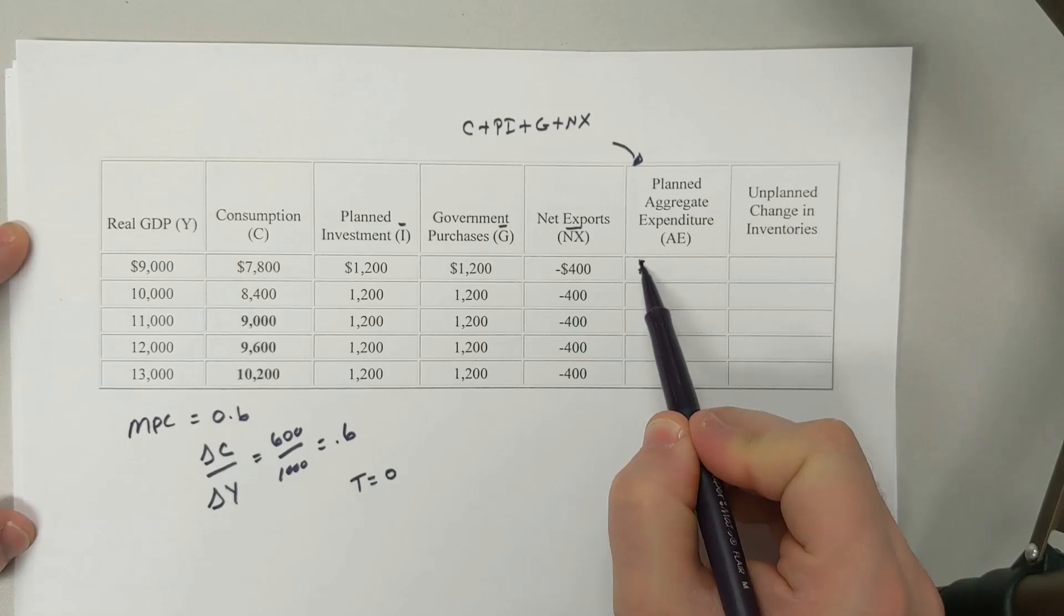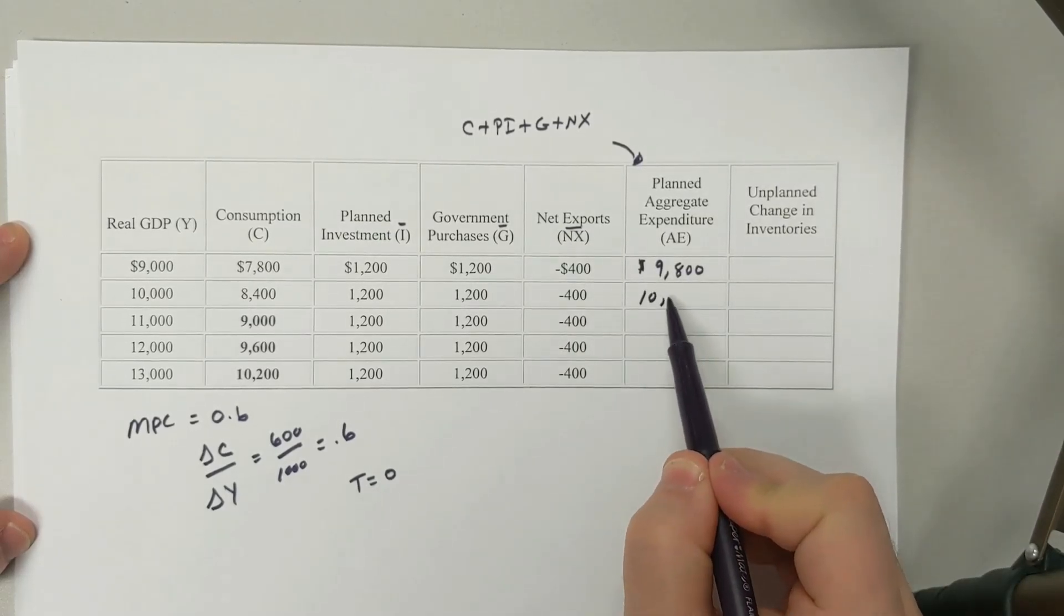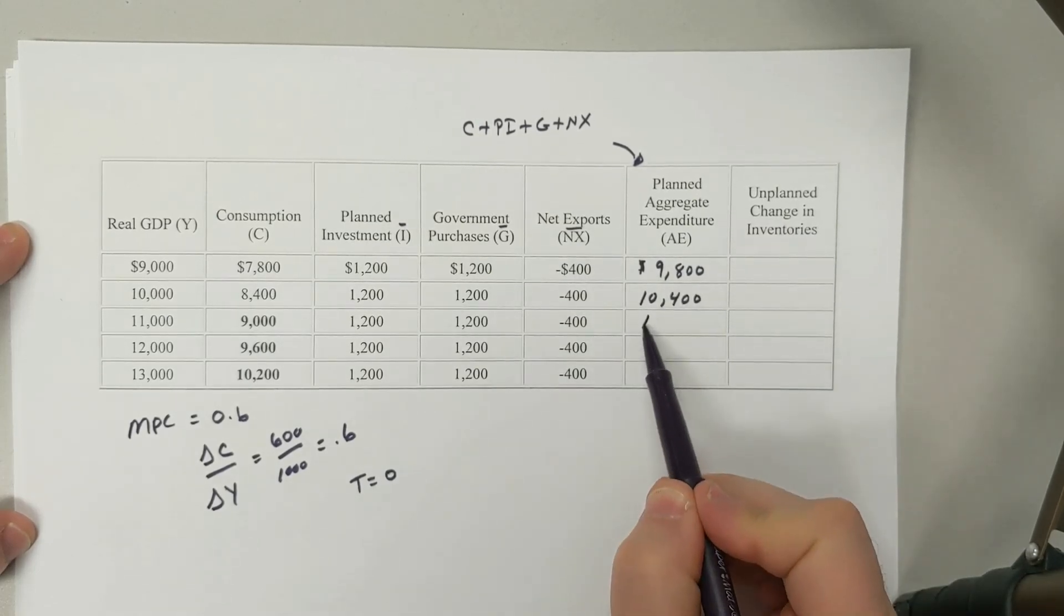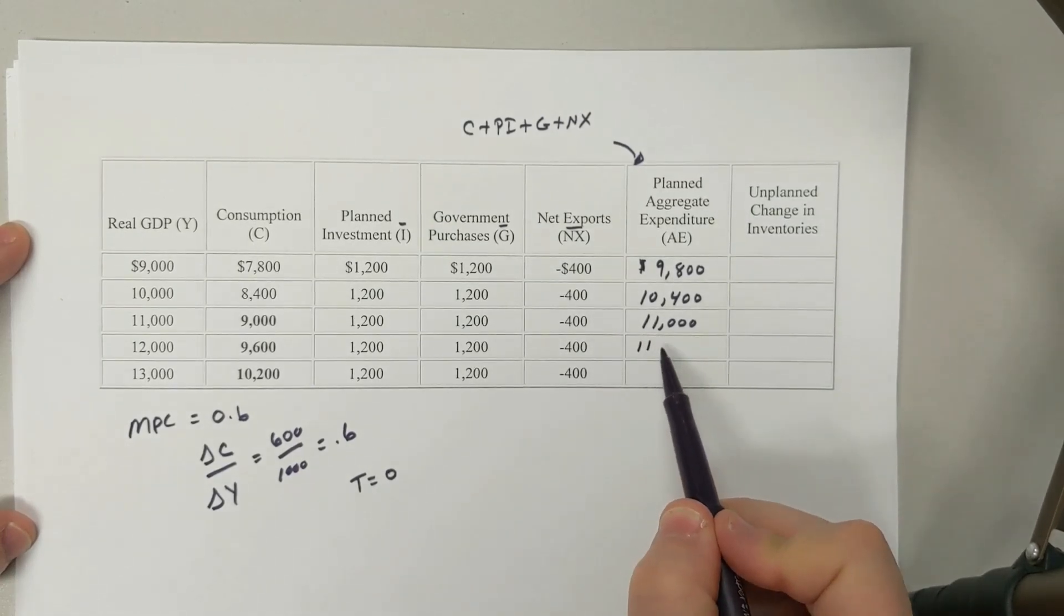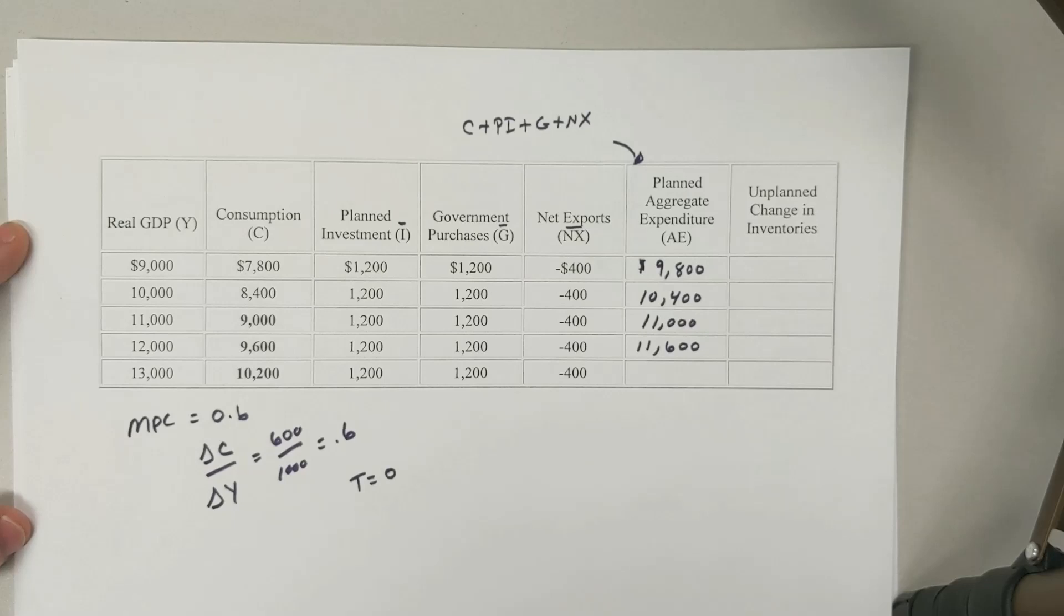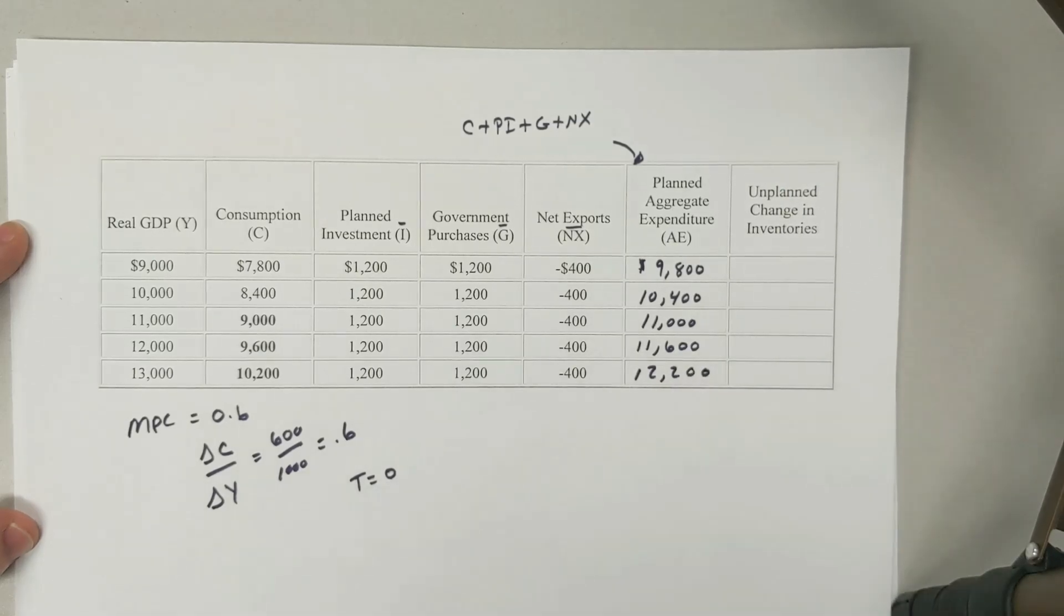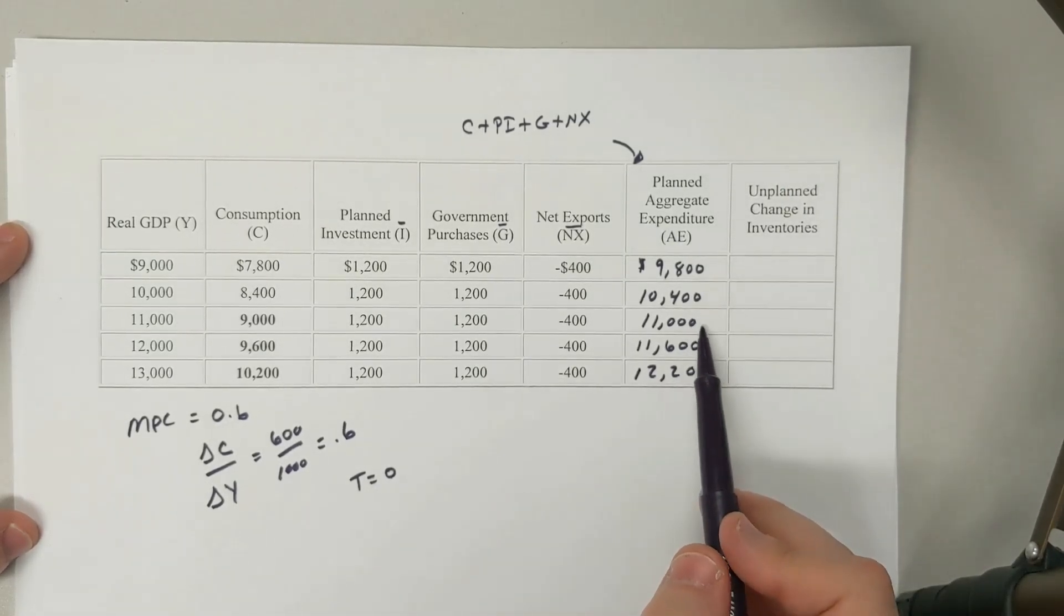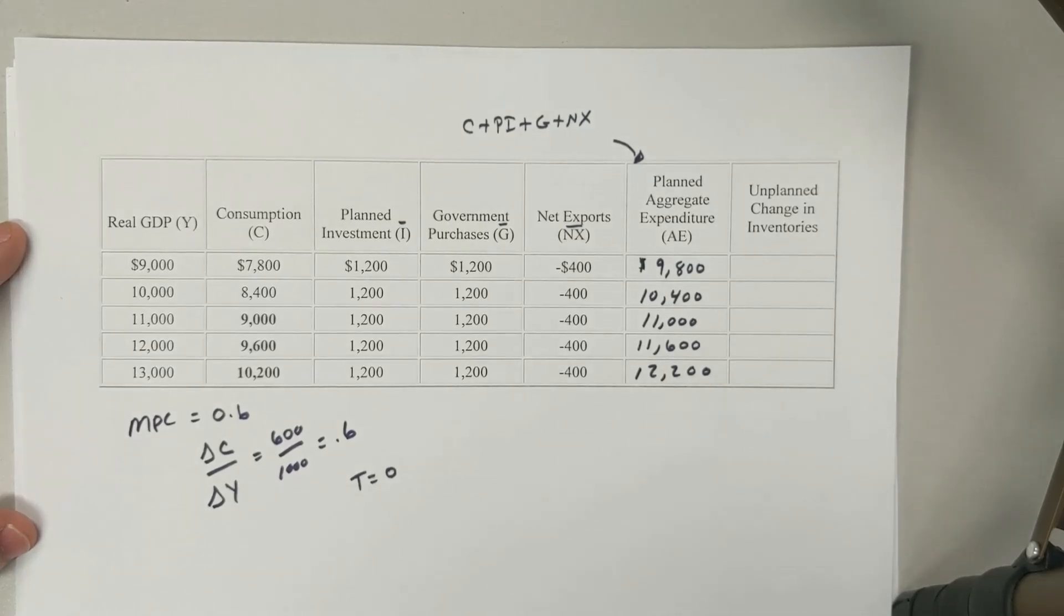What does that get us? Well, that'll get us 9,800, 10,400, 11,000, 11,600, 12,200. Notice each change is going up by 600 as well. The consumption function and the aggregate expenditure function have the same slope. They have that same slope.